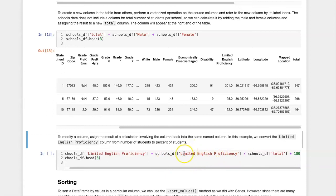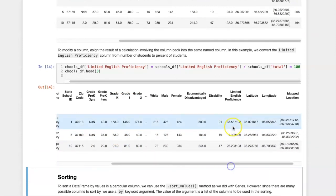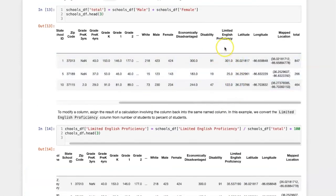if we wanted to turn the number of limited English proficiency students into percentage, we could divide that by the new total column, multiply by 100 to put it as percent, and then replace the original limited English proficiency column with the new one that we've calculated. Now the limited English proficiency column is based on percent instead of on absolute number of students as it was originally.